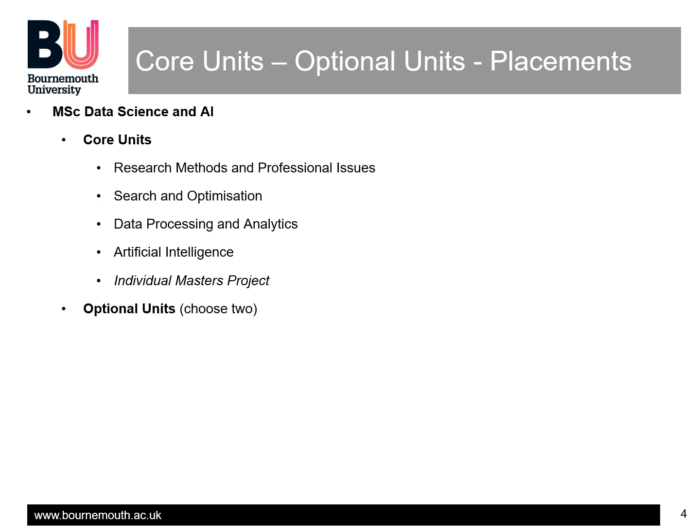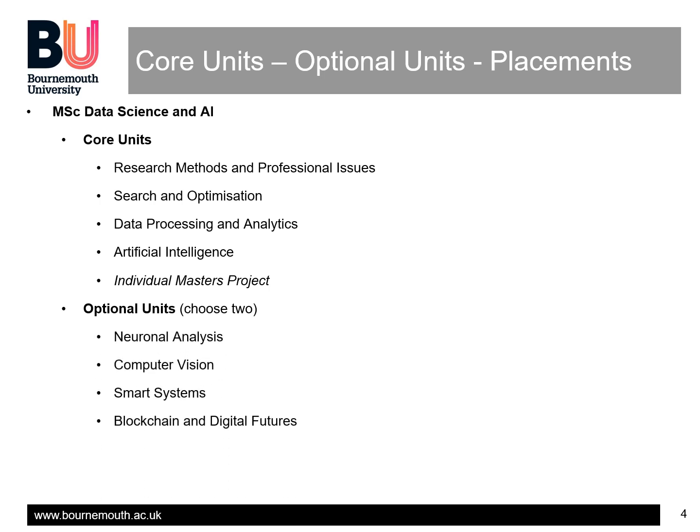You also have optional units, of which you will be able to choose two. These are neuronal analysis, computer vision, smart systems, blockchain, and digital future.